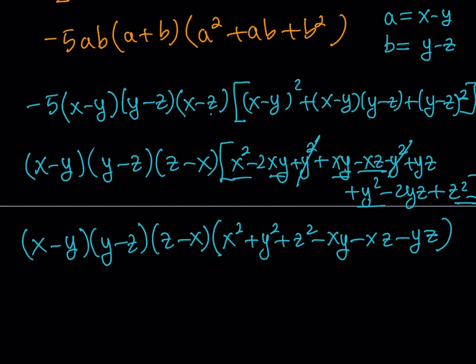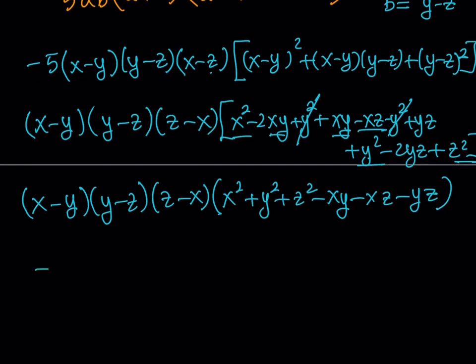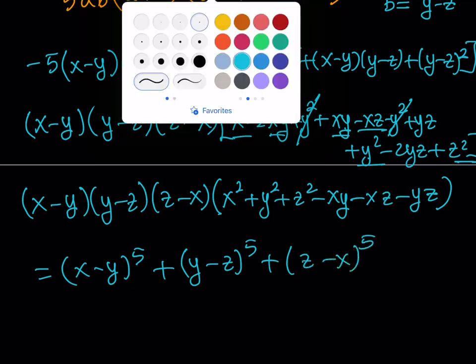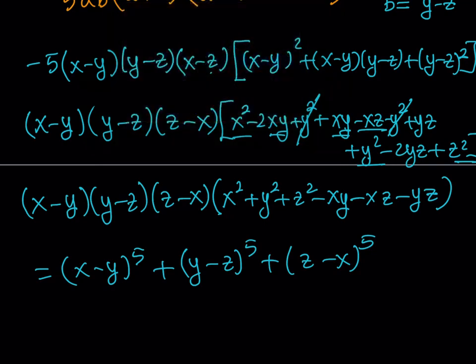So our original expression, once again, was x minus y to the fifth power plus y minus z to the fifth power plus z minus x to the fifth power. And it's just factored like this. And this basically concludes our video.